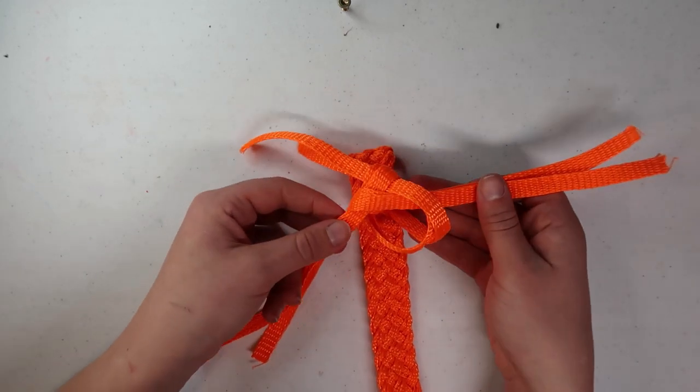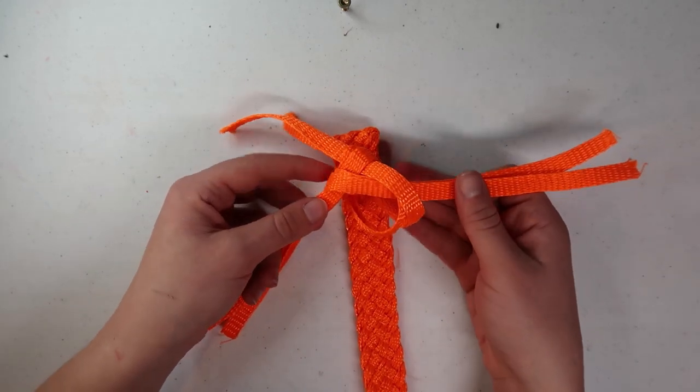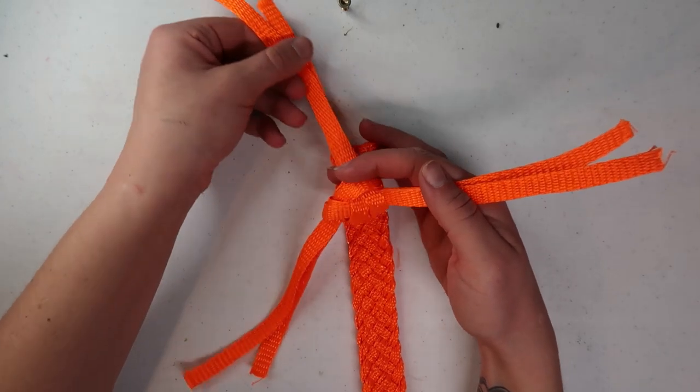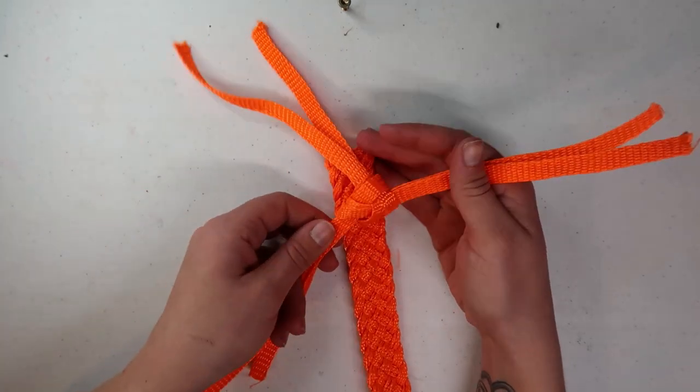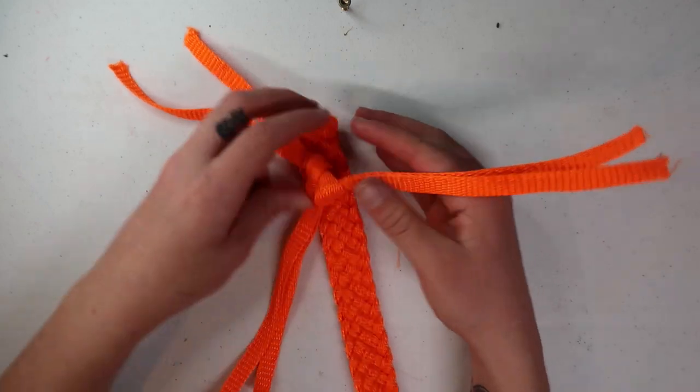Now we're going to keep moving in that counterclockwise pattern, and we're going to start slowly tightening down all of our strands. So we'll move back to our group one strand, and suck it down a little bit, and then we'll move over to two.